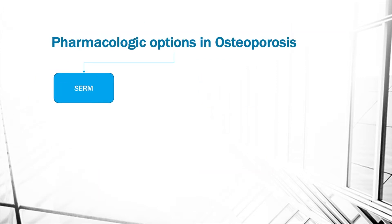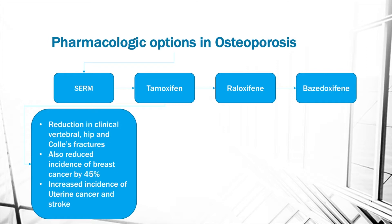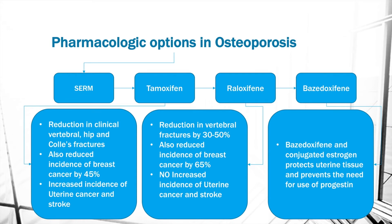The next pharmacological option is selective estrogen receptor modulators, examples of which include tamoxifen, raloxifene, and bazedoxifene. Tamoxifen showed reduction in clinical vertebral, hip, and Colles' fractures and reduced breast cancer incidence by 45%, but increased uterine cancer and stroke. Raloxifene reduced vertebral fractures by about 40% and breast cancer by 65%, with no increased incidence of uterine cancer or stroke. Bazedoxifene with conjugated estrogen protects uterine tissue and prevents the need for progestin.